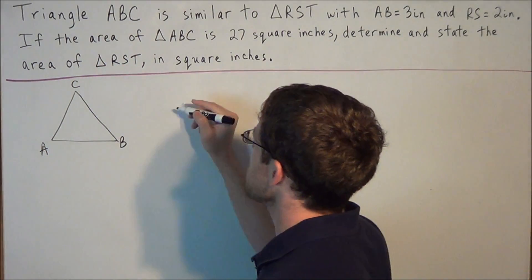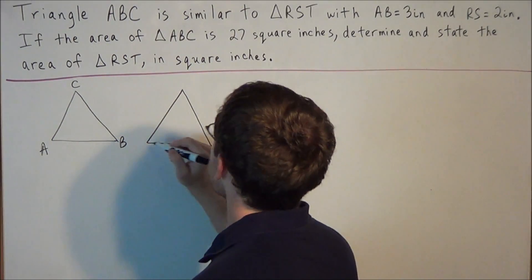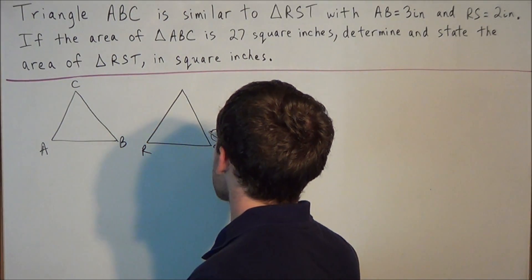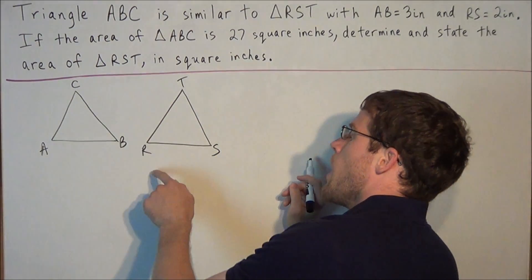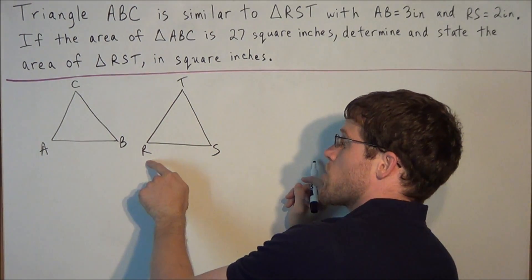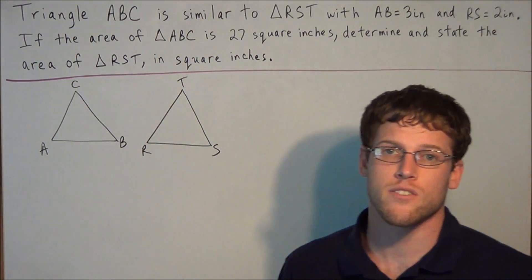And we know that triangle ABC is similar to triangle RST. So one important thing to note is that since I lettered it ABC, I had to label the second triangle as RST because the letter arrangements are important when you're talking about similar triangles.